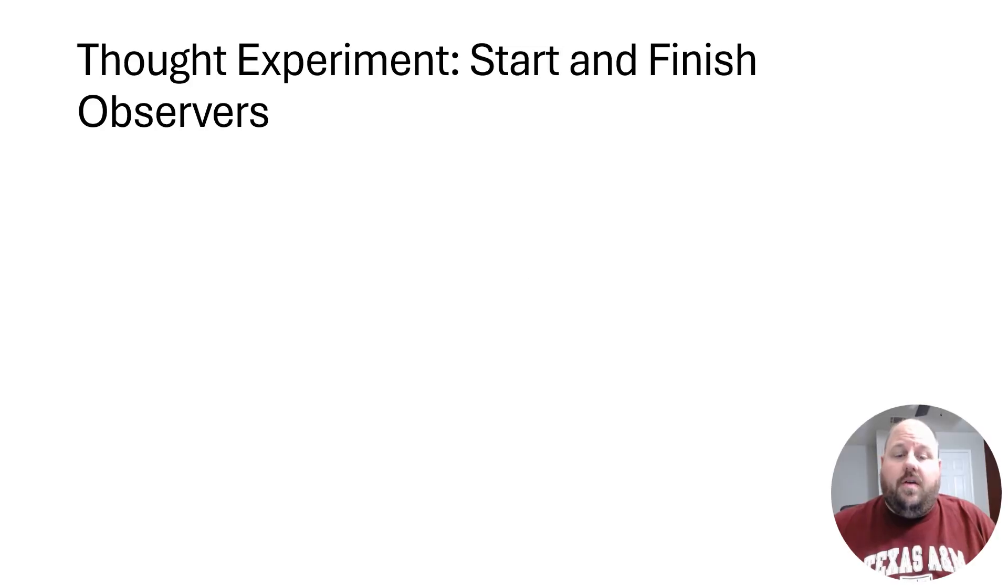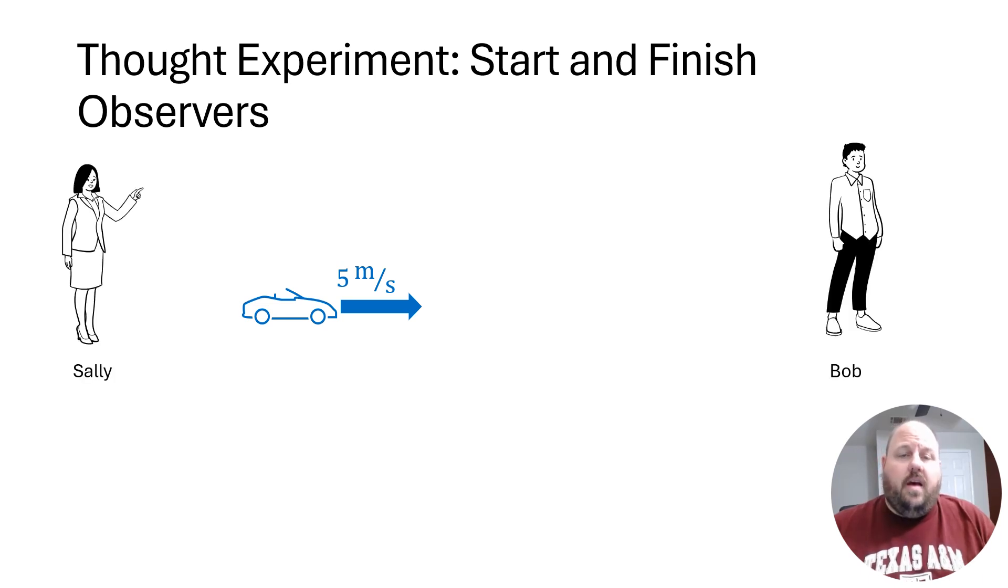So to kind of get us started, let's think about a classic thought experiment, which is a car moving in one direction that is being observed by two different people. And what's different about how they observe the motion of the car? So our two different people, one is Sally and the other is Bob. And if you look at that diagram, you'll notice that the car is moving towards the right, away from Sally and towards Bob.